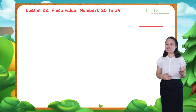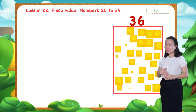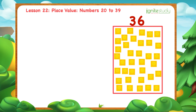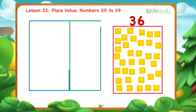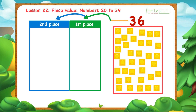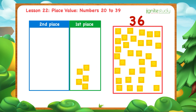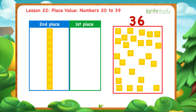Let's take another example. Suppose we have 36 blocks. We will put these blocks into 2 places. Starting from the right, this is the first place, and this is the second place. Now, let's put blocks into the first place: 1, 2, 3, 4, 5, 6, 7, 8, 9, 10. Then, when we have 10 blocks, let's group them together. Then, move the group to the second place.